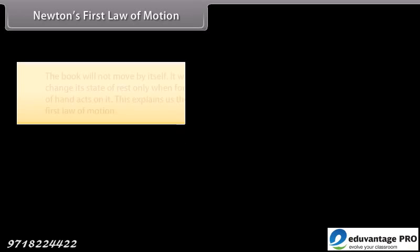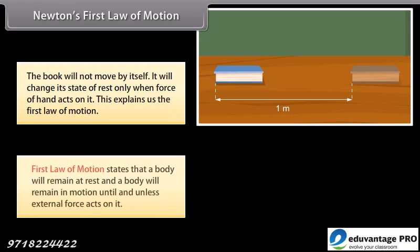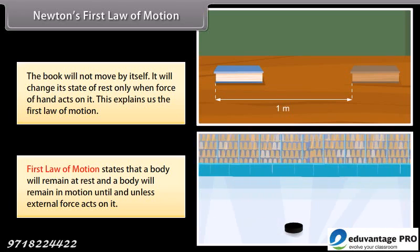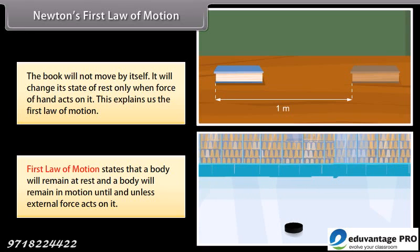Newton's first law of motion. The book will not move by itself. It will change its state of rest only when force of hand acts on it. This explains the first law of motion. First law of motion states that a body will remain at rest and a body will remain in motion until and unless external force acts on it.